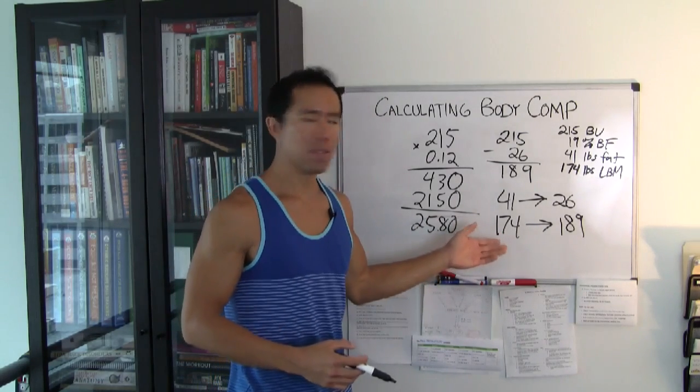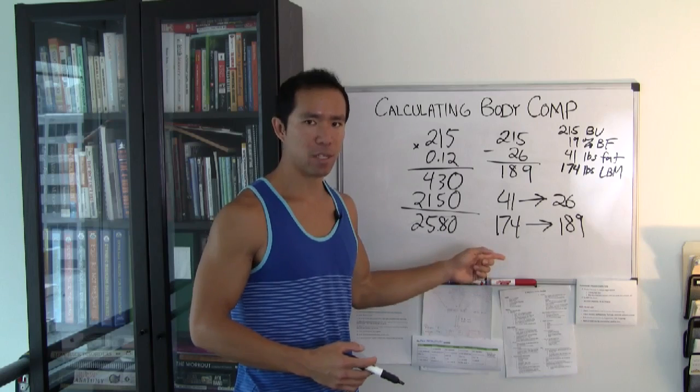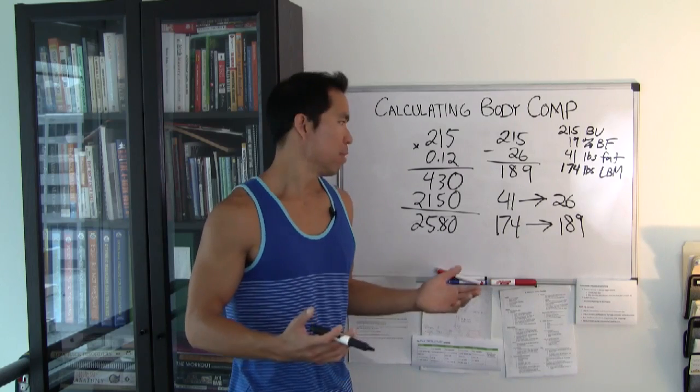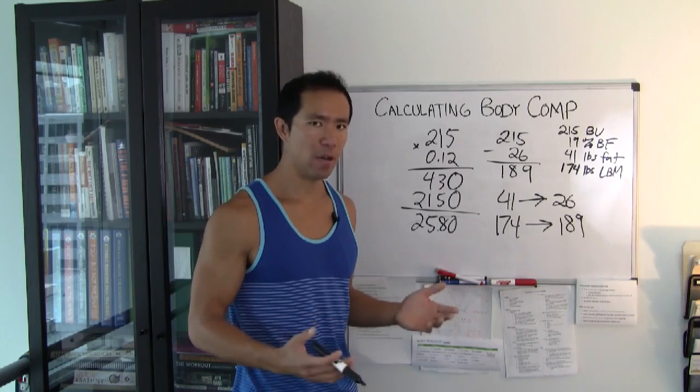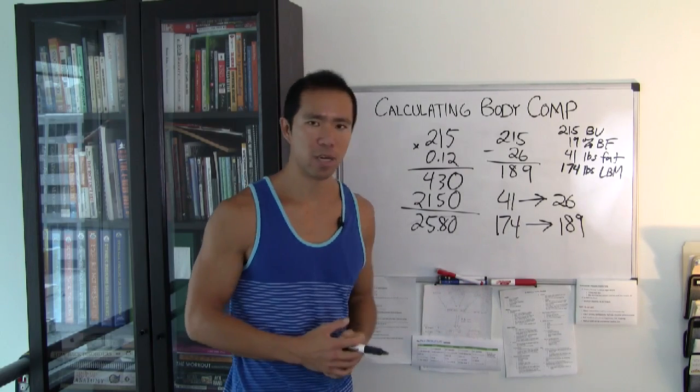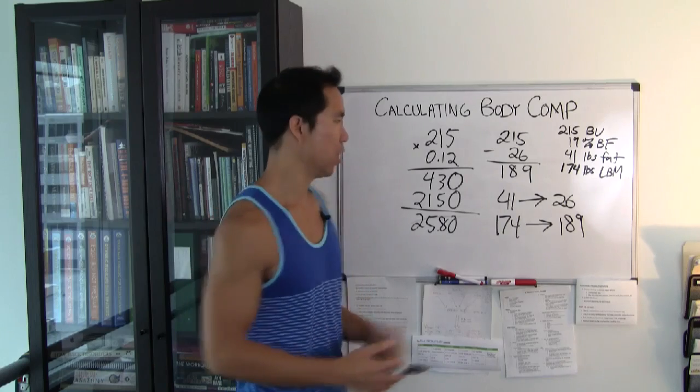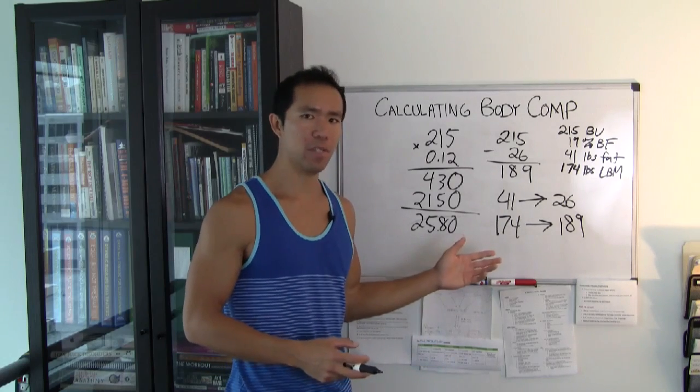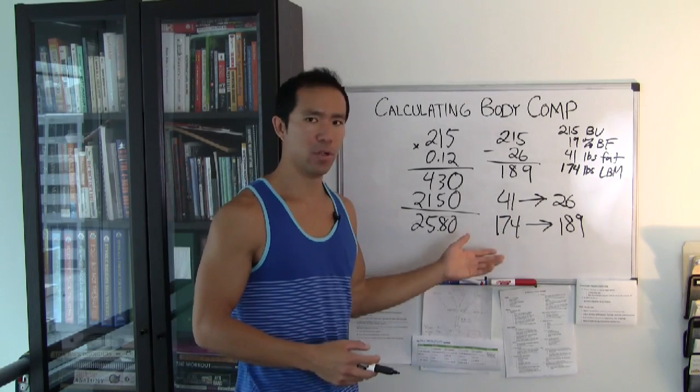So 15 pounds of fat lost, 15 pounds of muscle gained. If you're going to do maybe a pound, you're a pretty big guy, so you could do up to 2 pounds of change in your body composition per week. That's going to take at least 15 weeks or up to 30 weeks.